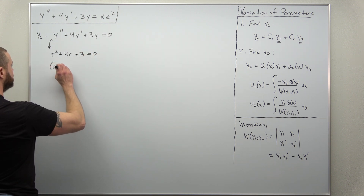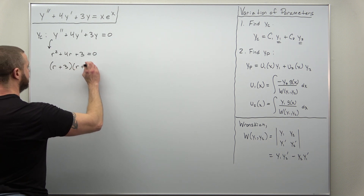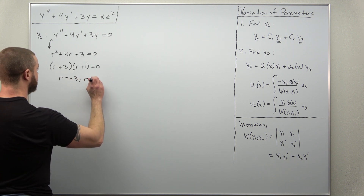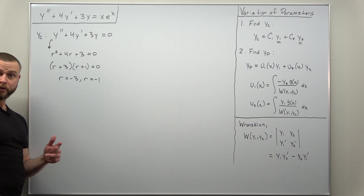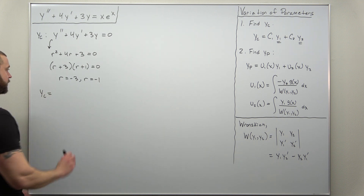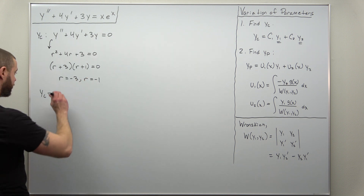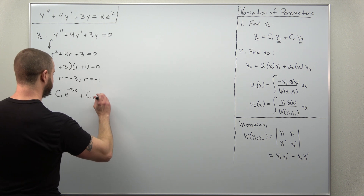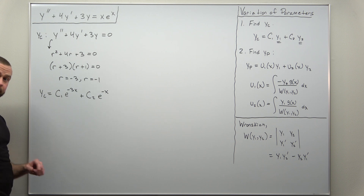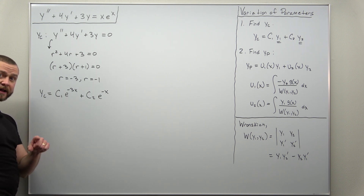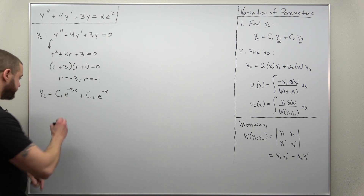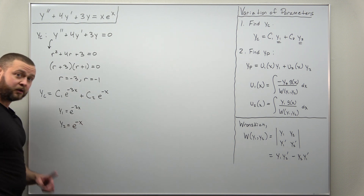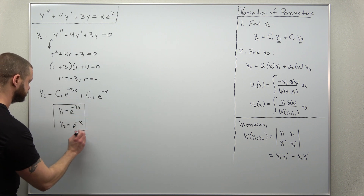It looks like that factors — we can write it as (r + 3)(r + 1), so we get characteristic roots negative 3 and negative 1. We can write down our complementary solution as a linear combination of e to the rx for each value of r: c1 times e to the negative 3x, plus c2 times e to the negative x. From this we identify y1 as e to the negative 3x and y2 as e to the negative x.